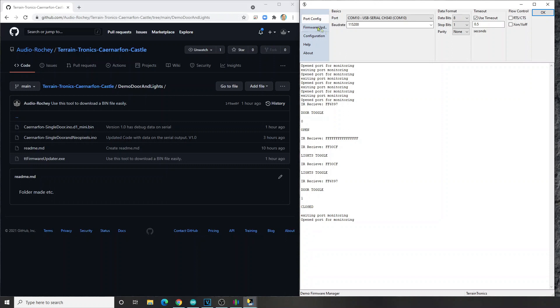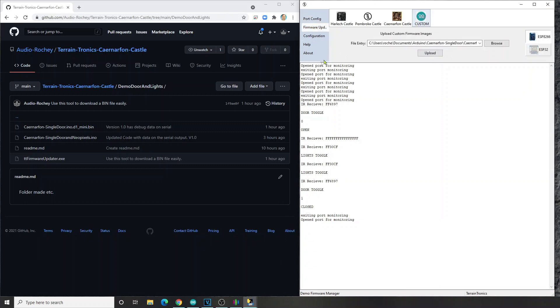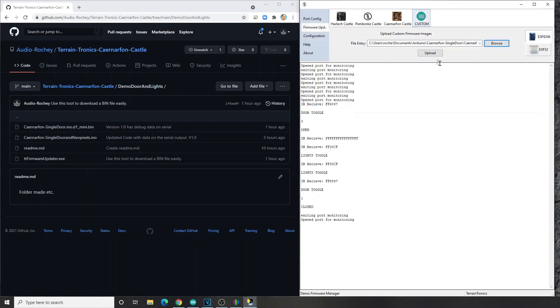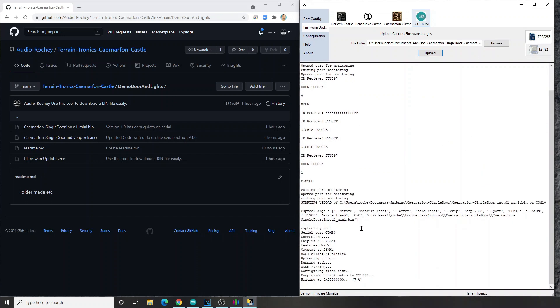All right, now we're going to go to firmware update and you're going to download the file from this demo door and lights folder on GitHub. There'll be a link below in the description. You want to download the bin file. Once you've downloaded that bin file, you're going to browse for it, select it and hit upload. It's going to ask you, do you want to upload it on COM10? Make sure it's on ESP8266 and then press OK. And then you'll see it upload.